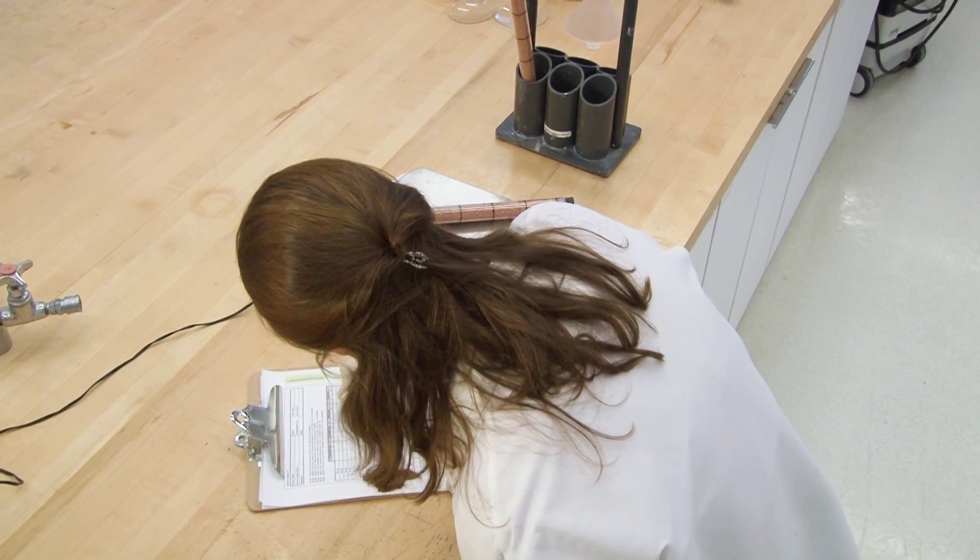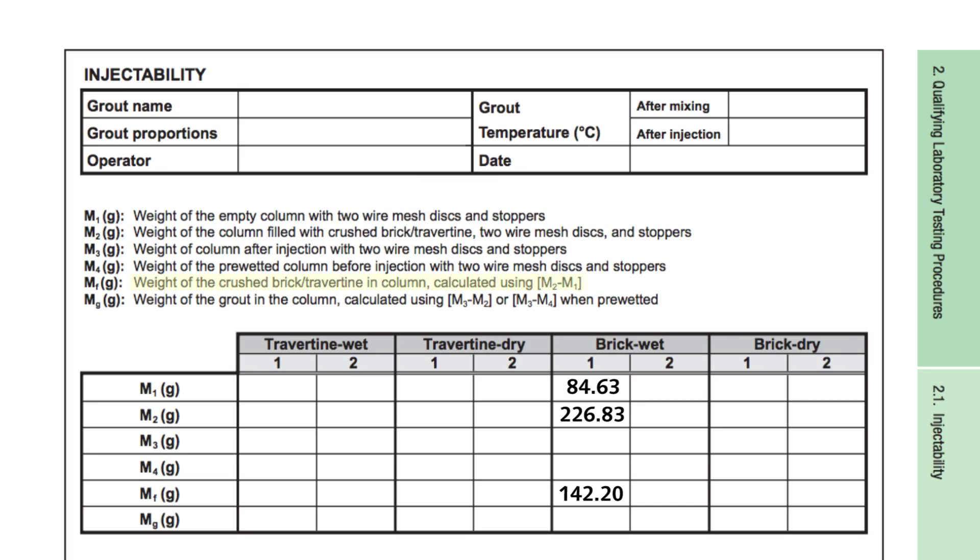Once the weight of granular material used to fill the columns is determined, we can skip weighing the empty column defined as M1 in data collection sheet. Instead, we weigh granular material and use it for filling the columns.